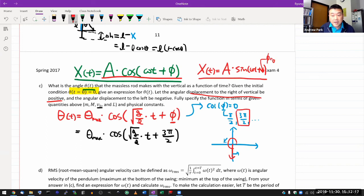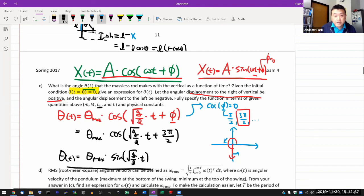And as time increases, you get positive displacement. So with that, one way you can write this out is theta of t as theta max times sine of square root of g over l times t.